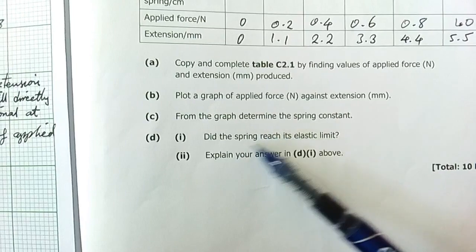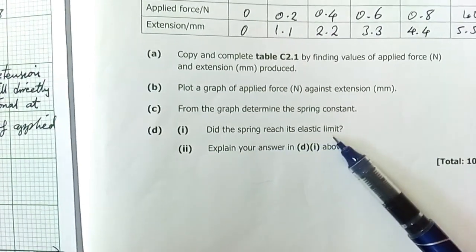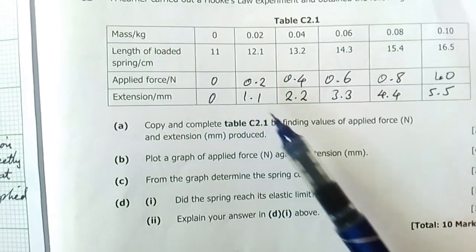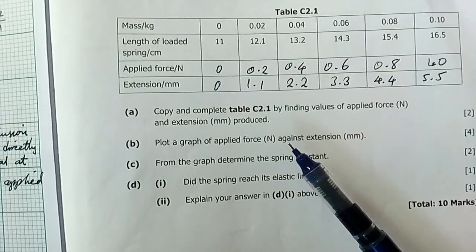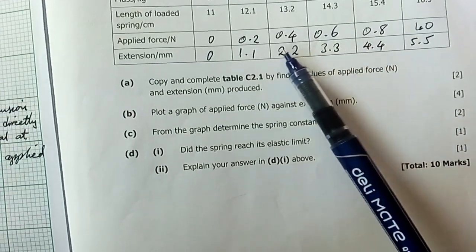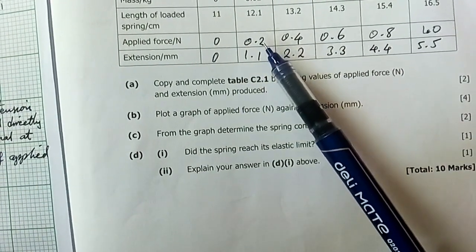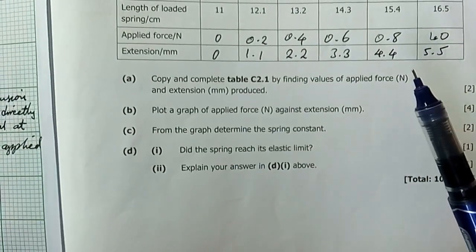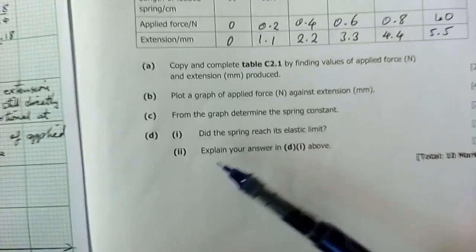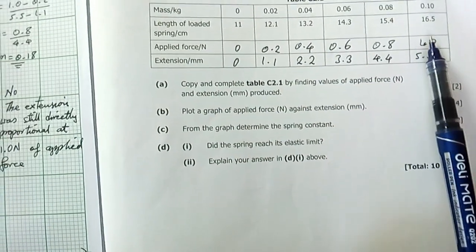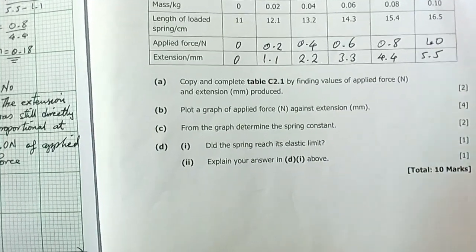The next question here reads: from the graph determine the spring constant. D1: did the spring reach its elastic limit? My answer would be no. Look at these values here - there's this direct proportion, this direct change according to Hook's law. The extension is directly proportional to the force causing it, provided the extension limit is not exceeded. So when you look at these values here, there is consistency. Here the change is by two - two, four, six, eight, ten - the change is by two, and even here the change is consistent. So the spring didn't reach its elastic limit. If it goes beyond the elastic limit it gets damaged. Number two: explain your answer in D1 above. I think I've actually explained - there is this direct proportionality between the values of extension and force applied.